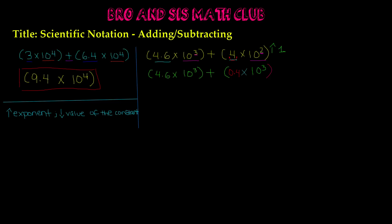Conversely, if we were trying to decrease the exponent, we would do the opposite and increase one place value of the constant. Now that we have the same exponents, we combine the constants: 4.6 plus 0.4 gives us 5 times 10 to the 3rd power. That is our solution.